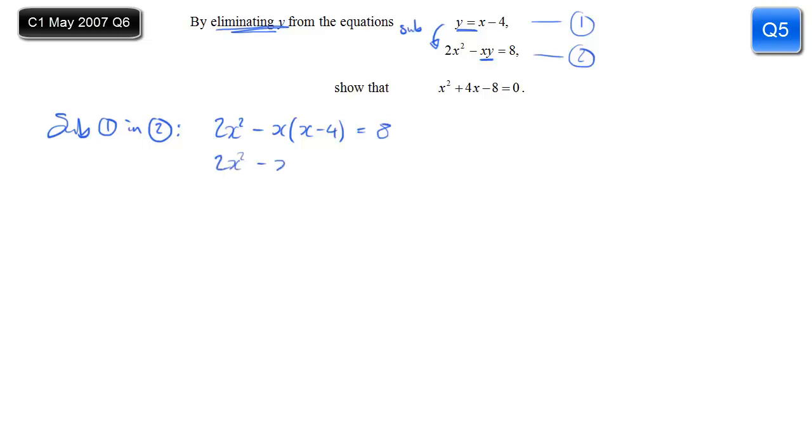And this is a quadratic with x in. I'm asked to show a quadratic with x in, so I just have to carefully rearrange that. Firstly, by expanding the brackets. And then simply by rearranging. So 2x squared minus x squared is 1x squared. The 4x stays there. And you move the 8 over from the other side to get minus 8 equals 0. There we go. We've shown what we were asked to show.